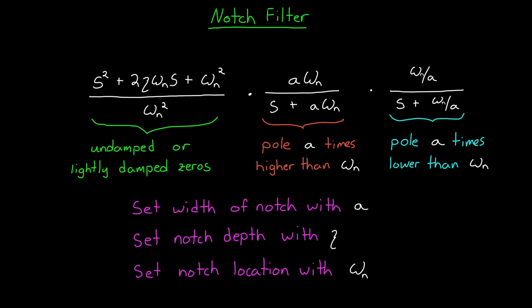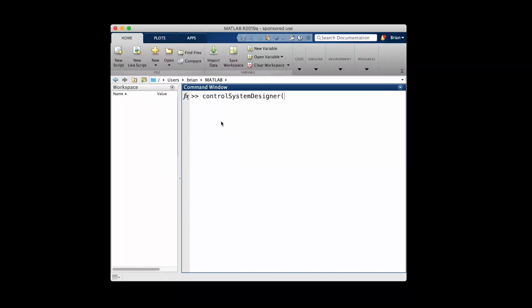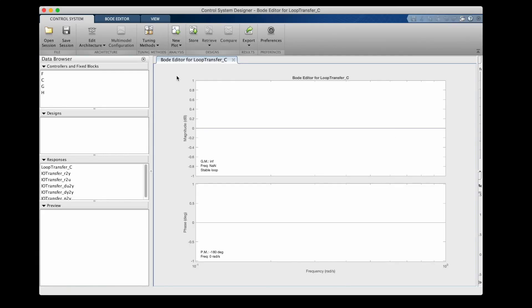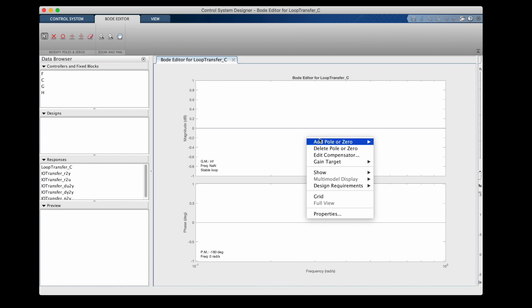Now that we understand how adjusting the transfer function impacts the location and shape of the stop band, the last thing I want to show you is that we can design a notch filter graphically with the control system designer app with a single click. I'll relaunch the app with no baseline transfer function so that the magnitude and phase are both zero.